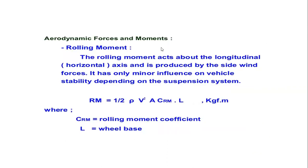Other forces acting during motion include the rolling moment. This force is basically created due to side wind forces. Its mathematical formula is ½ × ρ × V² × A × Crm × L, where ρ is the density of the air, V is the velocity, A is the area, Crm is the rolling moment coefficient, and L is the length of the wheelbase. Its influence is minor on the vehicle.